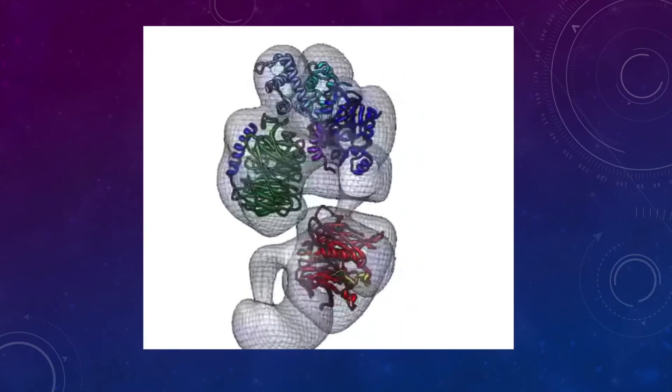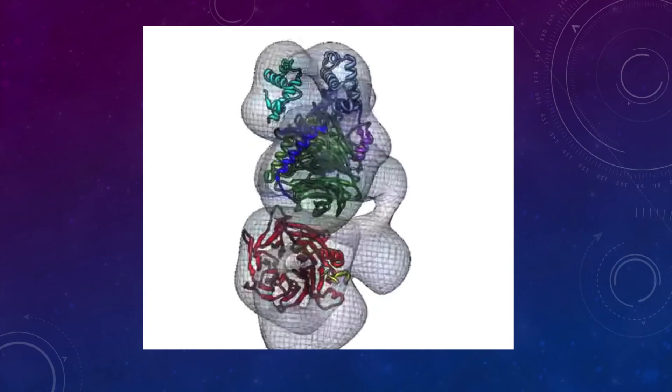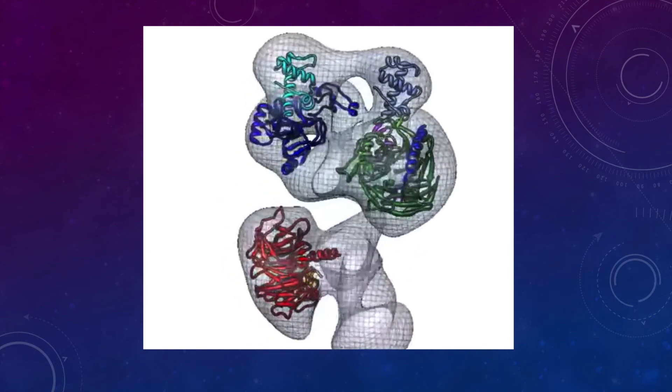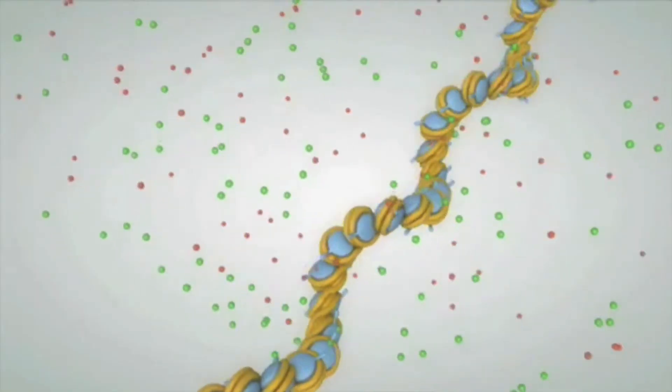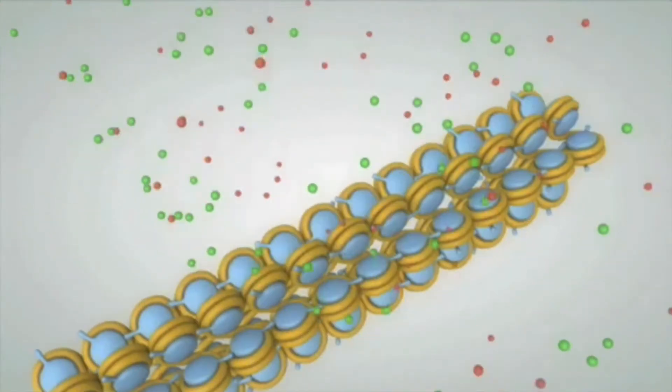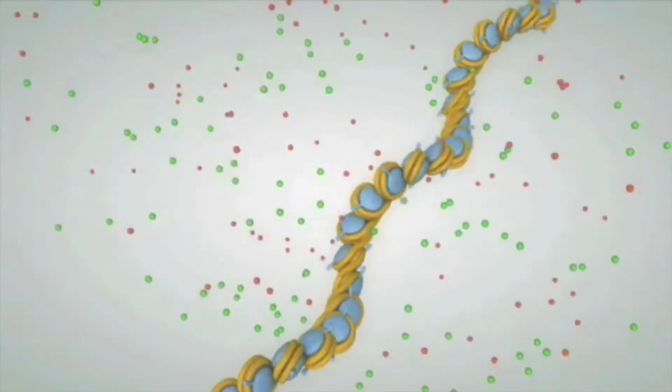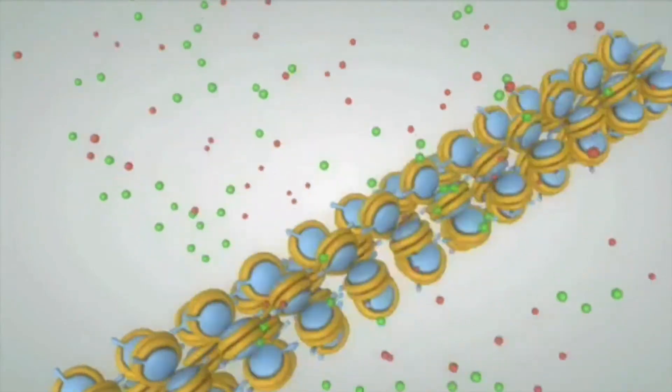Specifically, PRC2 trimethylates lysine 27 in the H3 histone subunit. This results in the silencing of a gene due to the modified nucleosome tightly condensing the chromatin to prevent transcription factors from interacting with the wrapped DNA.